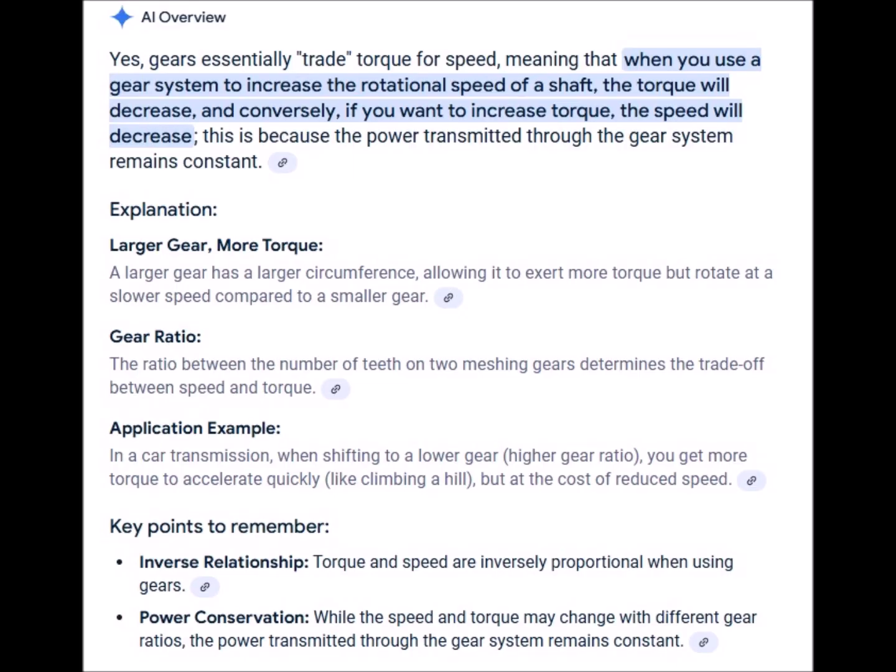This brings up an important relationship and that oftentimes in order to gain to a degree in one quality we have to trade to a similar degree in another. Just as in mechanical systems if we desire an increase in leverage or strength we often have to sacrifice about an equal degree of speed and vice versa.